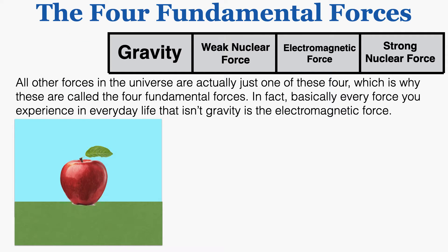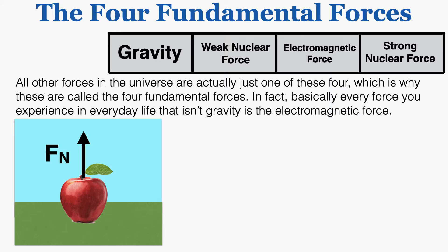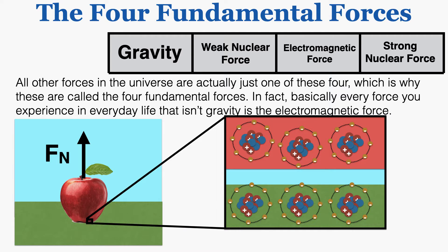For example, if we have an apple supported by the ground, the ground applies a normal force up on the apple. In previous units on force we call that the normal force, but if you zoom in to the atomic level, what's actually happening is that the electrons in the apple are repelling the electrons in the ground because they're both negatively charged. The electrons in the apple are pushed up, the electrons in the ground are pushed down, and so the whole mass of the apple is pushed up. So the electromagnetic force between atoms is what actually causes the normal force to exist.